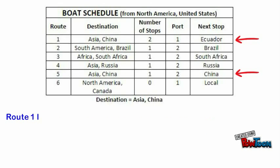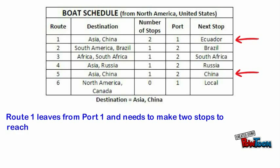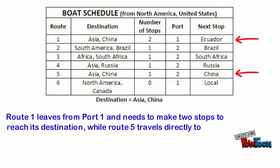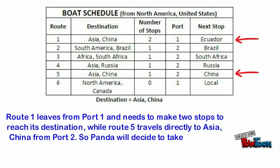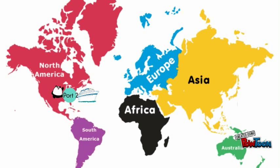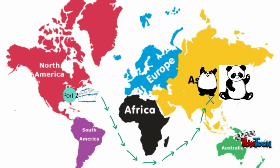Route 1 leaves from port 1 and needs to make two stops to reach its destination, while route 5 travels directly to Asia, China from port 2. So Panda will decide to take route 5 to China through port 2. Mr. Panda made it to China to see his mom.